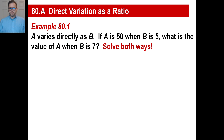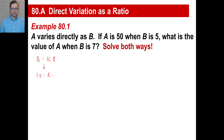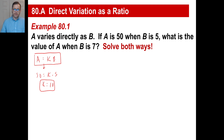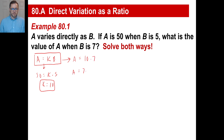A varies directly as b, so here's our equation. If a is 50 when b is 5, that tells us that k is 50 divided by 5, so k equals 10. We're going to use this equation again. They ask: what's the value of a when b is 7? If b is 7, we know k is 10, so a is going to be 70. That's the way we've done it before.